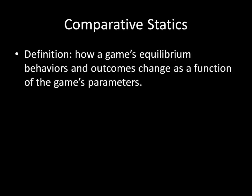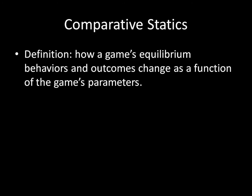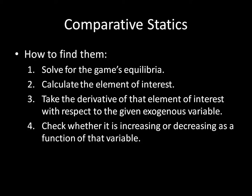In this particular example, we're looking at the parameter C — the cost value — and our outcome of interest is the probability of war. There are basically four steps to calculating comparative statics. First, you solve for the game's equilibria. Second, you calculate the element of interest. Third, you take the derivative of that element with respect to the given exogenous variable. Finally, you check whether it is increasing or decreasing as a function of that variable.